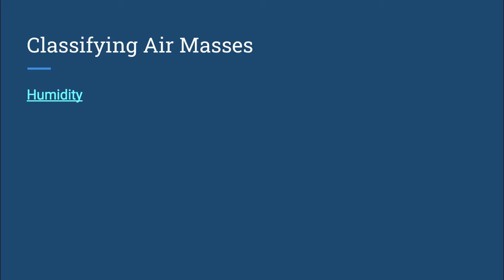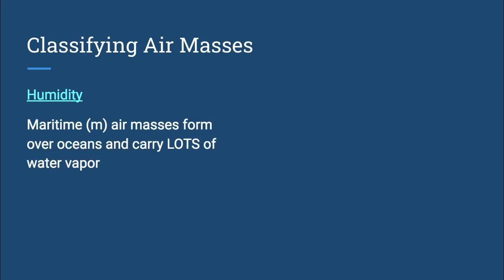Air masses get their names based on two things. The first being humidity. Maritime air masses, which you will see represented with a lowercase m, form over oceans and carry lots of water vapor. And that makes sense. As water evaporates, the air over the ocean will start to fill up with lots of water vapor.